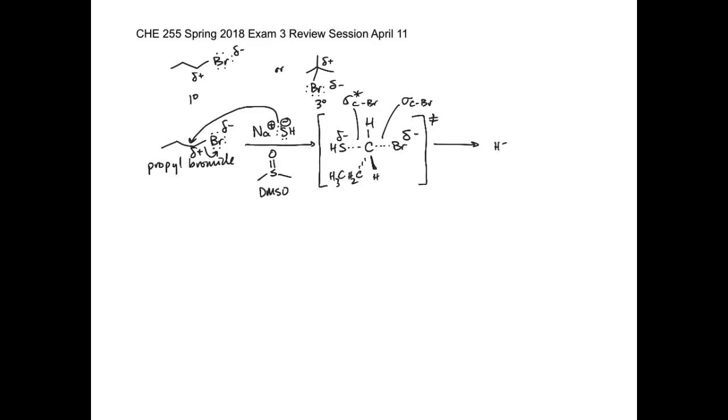The dagger in the brackets means transition state. And then what we're ending up with is the new carbon-sulfur bond. So overall we've taken propyl bromide and we've made propane thiol. A thiol is just like an alcohol. Sulfur is right below oxygen in the periodic table. The other inorganic byproduct of this is sodium bromide.